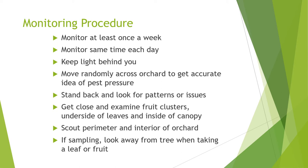General monitoring protocol: try to do it at least once a week if possible. Monitor at the same time each day, keeping the light behind you as you approach a tree — that helps keep highly mobile insects from spotting you and moving away. Move randomly across the orchard, which gives a more accurate idea of pest pressure than zeroing in only on trees with obvious damage. When you get to a tree, start by standing back and looking for patterns or issues to examine more closely, then get close and examine the fruit clusters, the undersides of the leaves, and the inside of the canopy. Look away from the tree when taking a leaf or fruit sample so you're not drawn to symptomatic leaves — you want a random selection to get an idea of the average level of pest infestation on that tree.